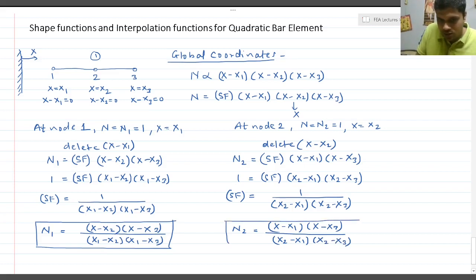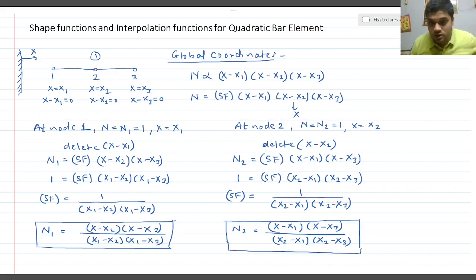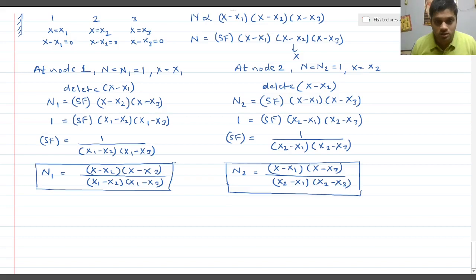N2 is also an order-2 polynomial — a quadratic function. In the numerator you have an x squared term, and in the denominator these are all constant distances, same as with N1.